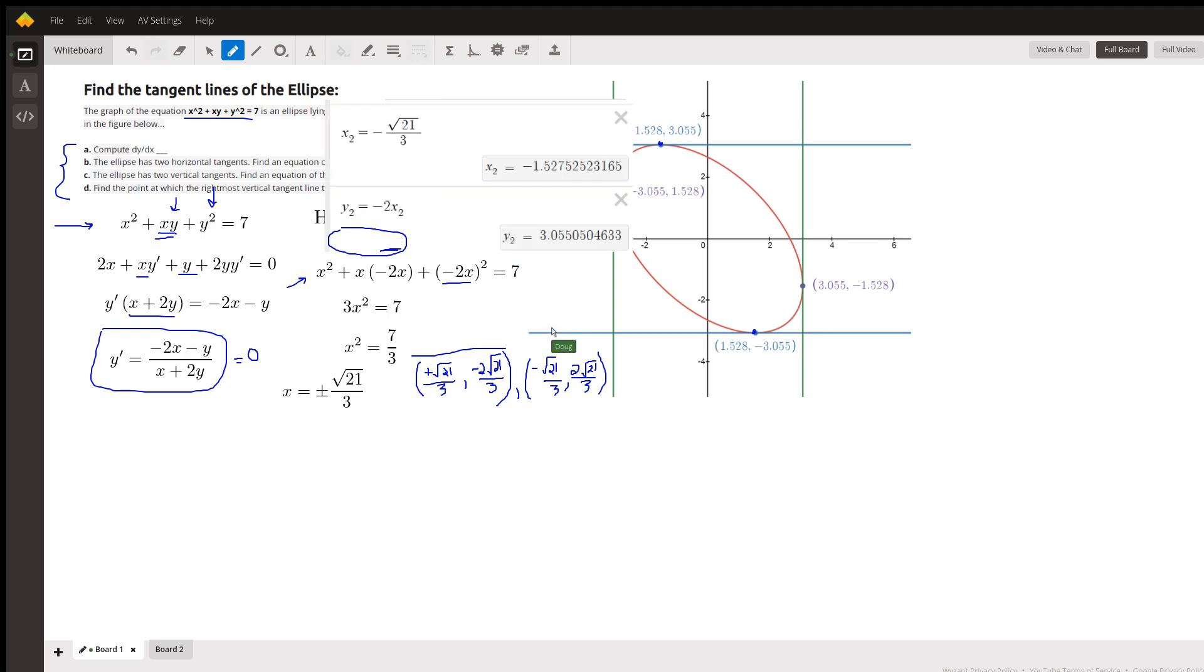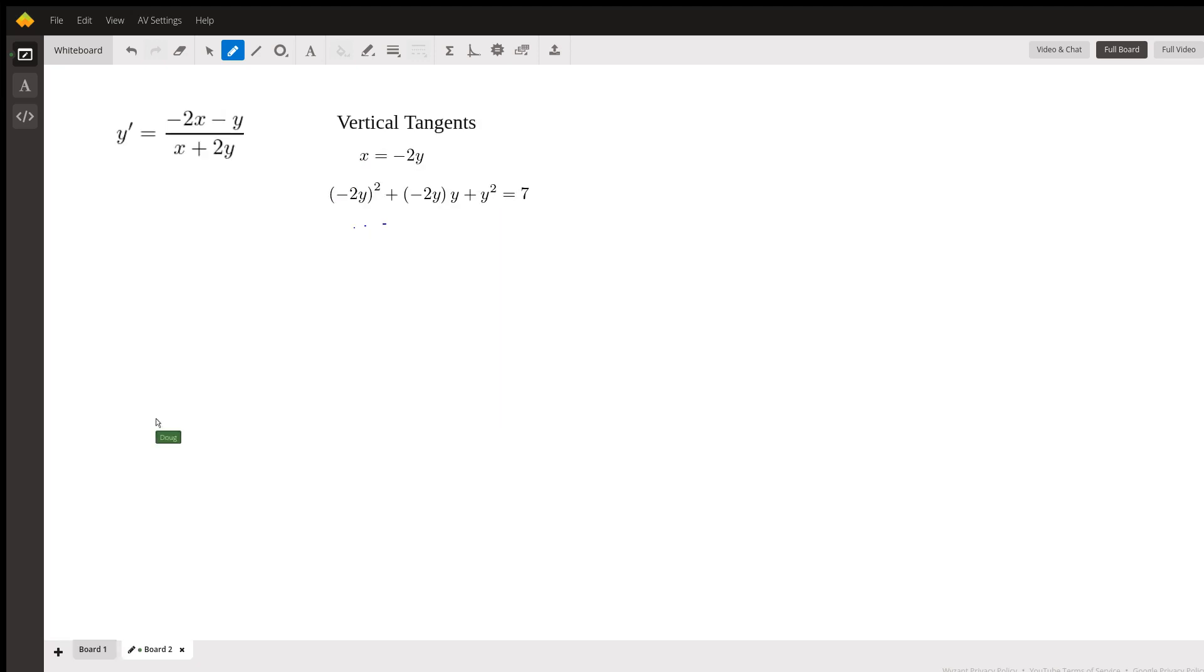Now to find the vertical tangent lines, I will not take this to completion but it's the same idea. Vertical tangent lines occur where the first derivative is undefined, and that happens when the denominator equals zero. So if x plus 2y is equal to zero, that happens when x equals negative 2y. So we'll plug negative 2y in the original equation definition for the ellipse and solve for y.